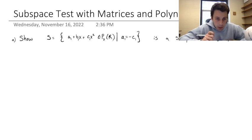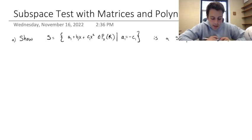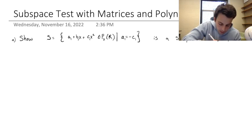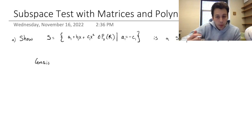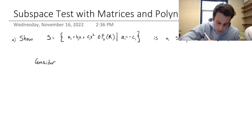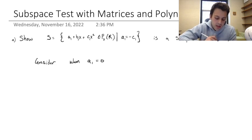The condition here is that the coefficient of the zero-degree term must be equal to the negative of the second-degree term. First we want to consider if the zero polynomial is in this subspace. Consider when a1 is equal to 0 — notice that is equal to negative c1, which is equal to b1.